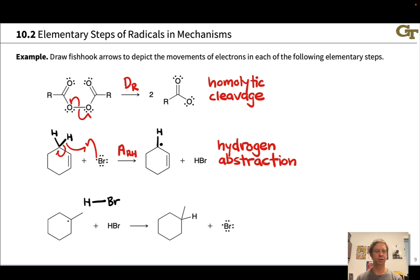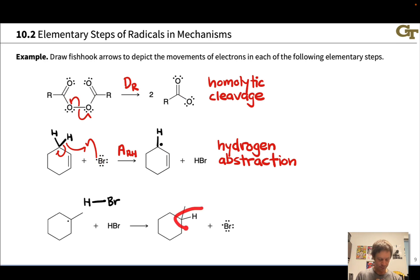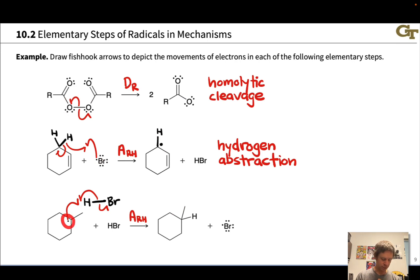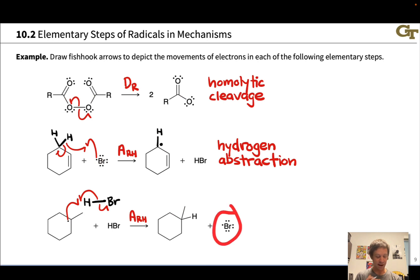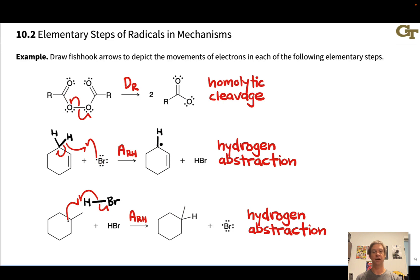Something very similar is happening in the third example. We start with HBr and generate a bromine radical — this is kind of the reverse, with a carbon radical abstracting an H from HBr. We make a new CH bond and break the HBr bond. Using fishhook arrows: the new CH bond is made from the radical electron and one HBr bonding electron; the other HBr bonding electron heads off to bromine to create a bromine radical. This is just hydrogen abstraction again.